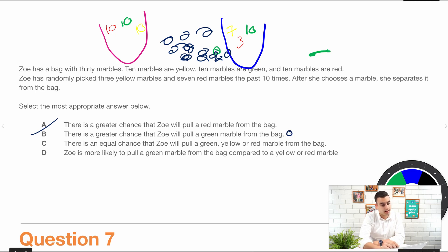There is an equal chance that Zoe will pull one or the other. So that's incorrect. And notice how if we misread this and we think that she does put the marble back, as in like she's picking from the original case. Of course, there's 10, 10, 10. It's an equal chance. But we know because it says after she chooses the marble, she separates it from the bag. This is an example of dependent probability. So it's no longer the same. So C is incorrect.